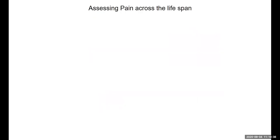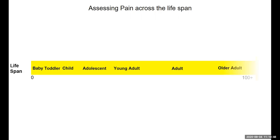As we think about pain, I'd like to propose a framework: thinking about the lifespan. Because we're interested in research spanning from very young babies — identifying appropriate therapeutic or interventions to reduce acute pain in infants — all the way up to pain in older adults, it's important that we take the lifespan into consideration, both in terms of the outcomes we want to measure and how we measure them.